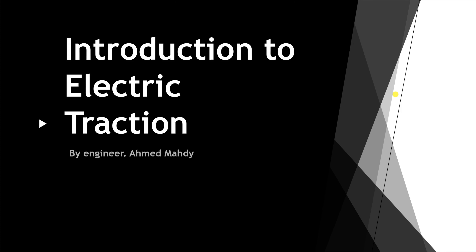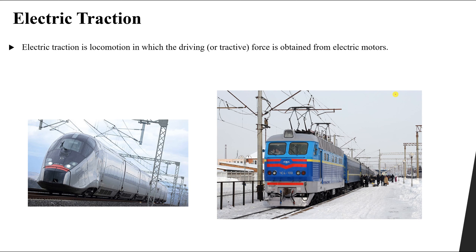What does electric traction even mean? Electric traction is simply locomotion in which the driving force, or the tractive force, is obtained from electric motors. As you can see in these figures, we have two trains getting their electricity from an overhead transmission line, or even from a diesel generator. When we say electric traction, we mean that we are using electric motors to drive trains, trolley buses, or any type of traction — electric motors providing mechanical power to move these locomotives.